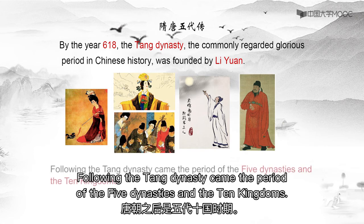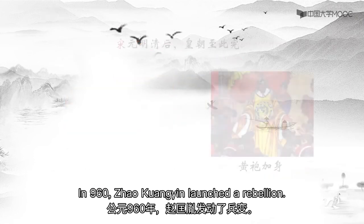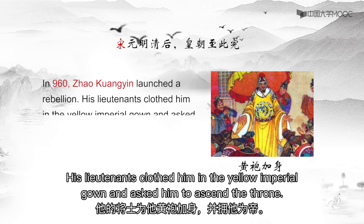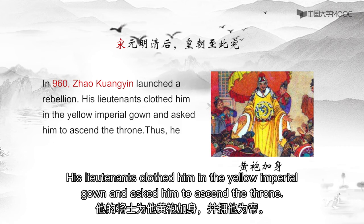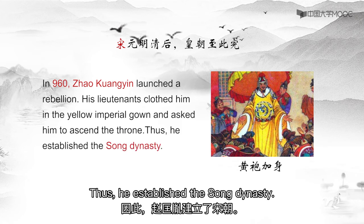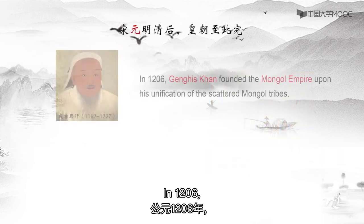Following the Tang Dynasty came the period of Five Dynasties and the Ten Kingdoms. In 960, Zhao Kuangyin launched a rebellion. His soldiers clothed him in the Yellow Imperial robe and asked him to ascend the throne. Thus, he established the Song Dynasty.